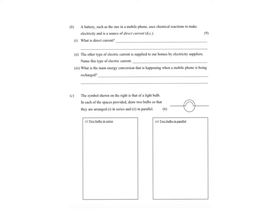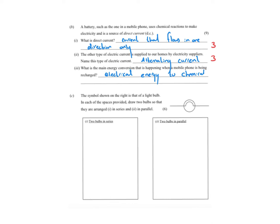An exam question states: a battery, such as one in a mobile phone, uses chemical reactions to make electricity and is a source of direct current. What is direct current? Direct current is current that flows in one direction only — if it could go in both directions that would be alternating current. The other type supplied to our homes by electricity suppliers is alternating current. The main energy conversion when charging a mobile phone is electrical energy to chemical energy, because batteries store chemical energy.